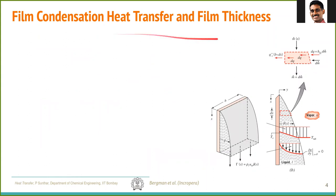Let us look at the heat transfer process. We consider an elementary control volume of height dx and unit width b. The mass flux at any point is m-dot at x and m-dot plus dm at x plus dx — it is more because more vapor has condensed over that surface. As more vapor condenses, you are adding mass, and in the process of adding that mass, the latent heat is also added to the control volume. Through this surface, you have both mass flux and latent heat flux dq.